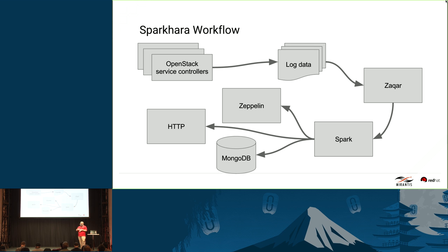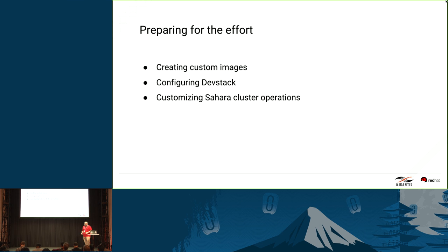In the SparkHara workflow, the OpenStack service controllers create log data. A process takes that log data and feeds it into a Zakhar queue. Another process on the nodes with our Spark processes pulls messages off the queue and feeds them to Spark. Once Spark has it, we can do the processing — hook in Zeppelin, normalize the data, send it to Mongo, or send it out to an HTTP endpoint. To prepare for this, we created custom images using Spark 1.5, configured DevStack to add the Zakhar and Trove plugins, and tweaked the Sahara cluster operations to handle Spark 1.5, since Sahara currently only supports up to Spark 1.3.